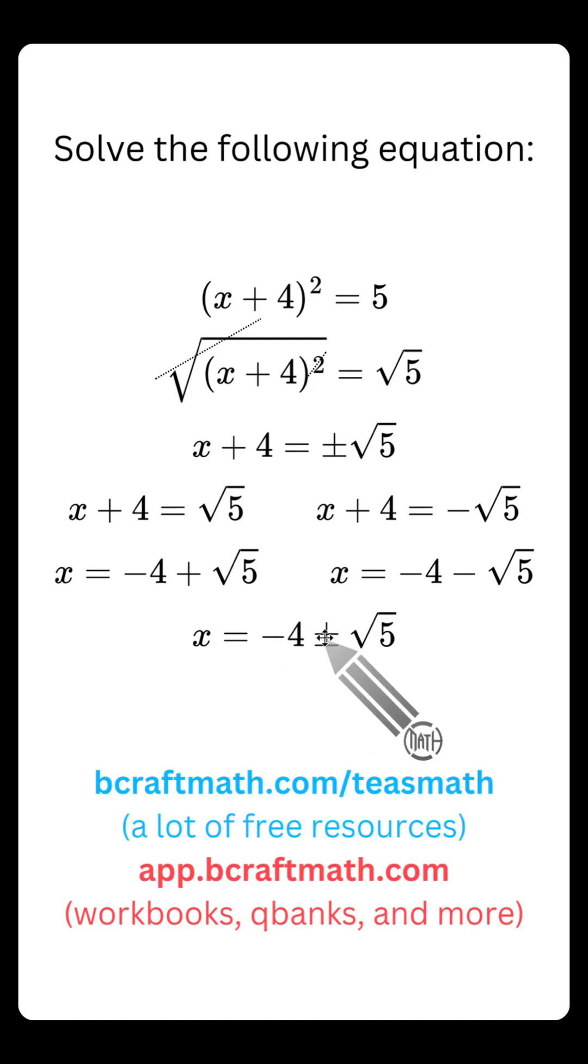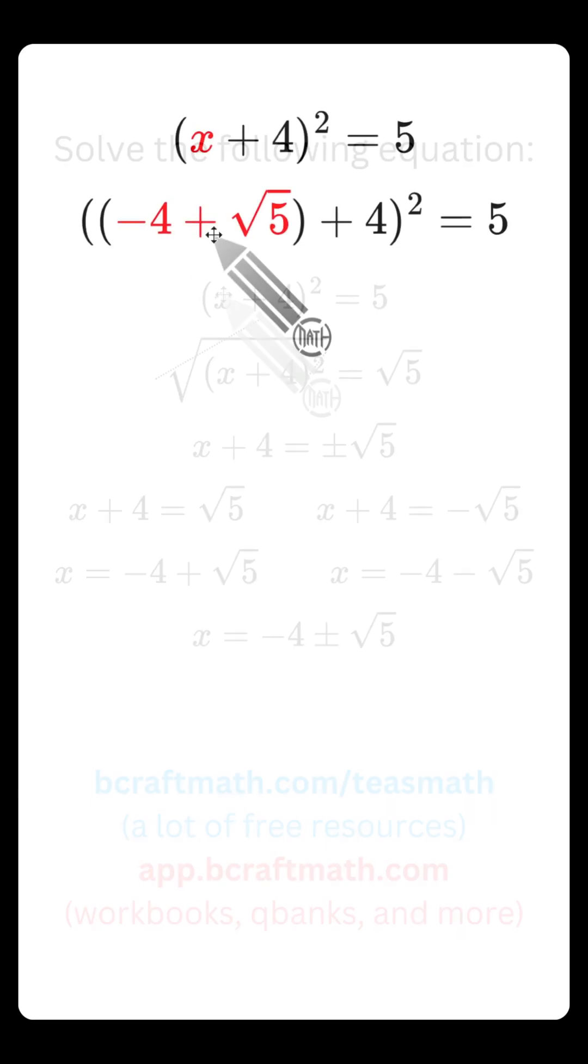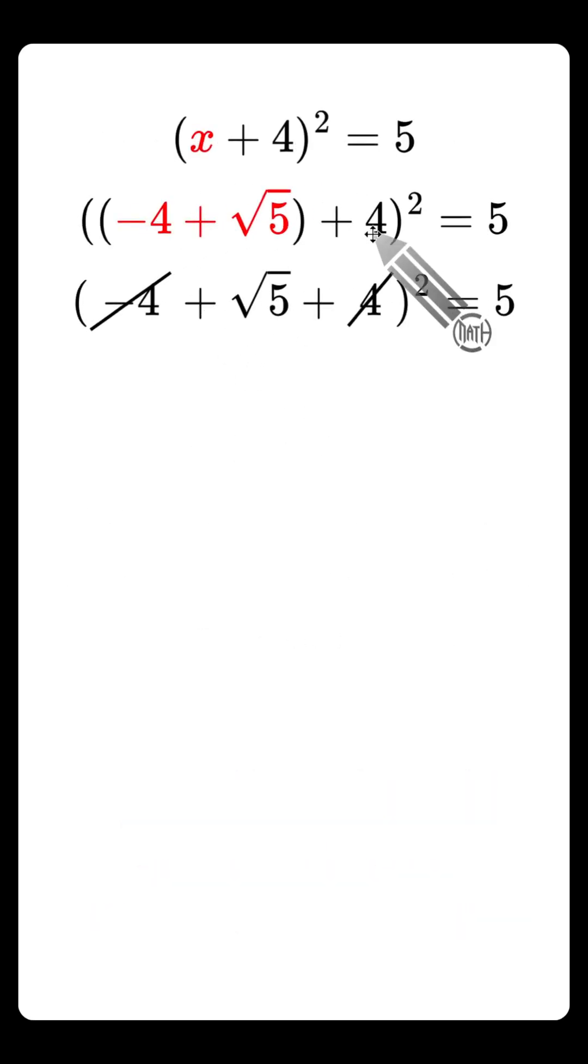And here's something to leave you with. If we actually take negative four plus the square root of five and negative four minus the square root of five, if we substitute that back into this equation up here, when you do that, this negative four and this positive four, they cancel out.